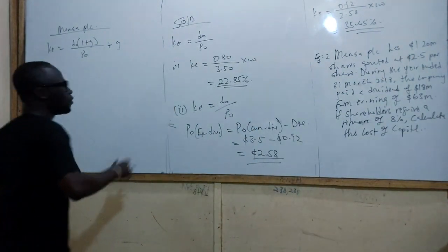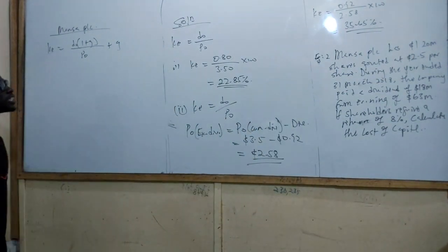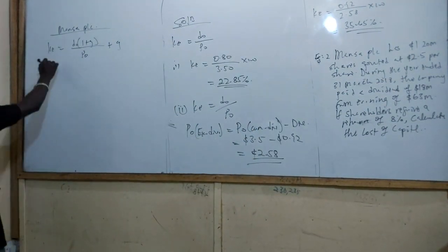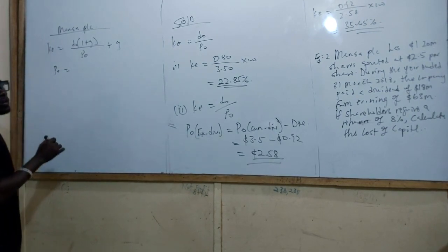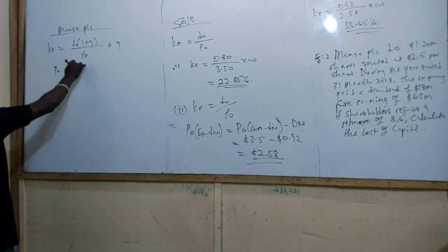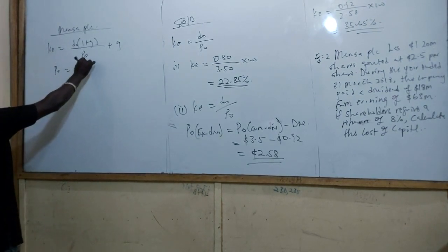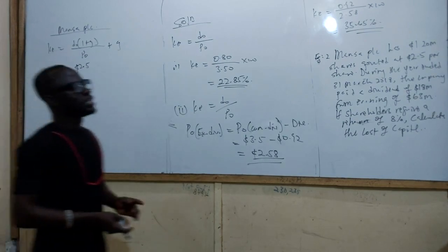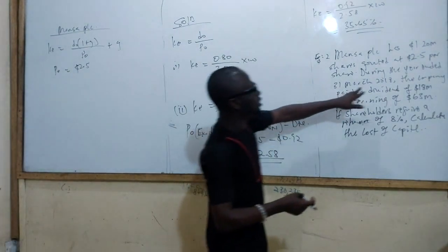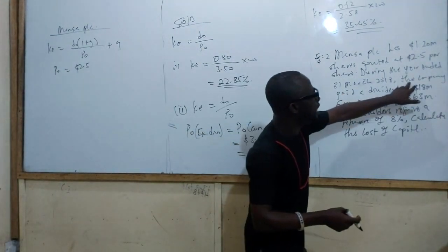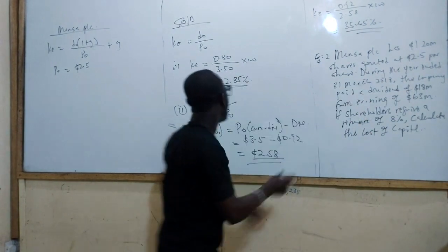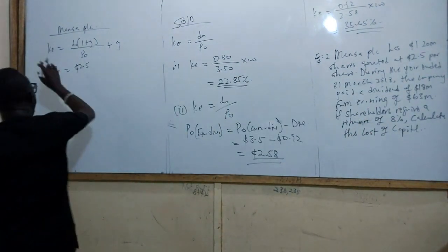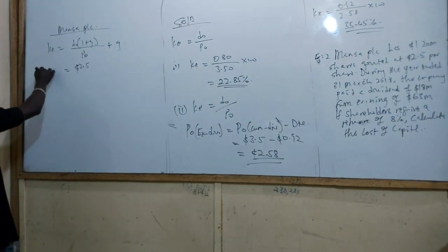We need to identify what we have. Number one, we are given P0, the quoted price of the shares, which is $2.5. Since during the year the dividend has already been paid, this is the ex-dividend market value — that is our P0 ex-div, and it has been given to us.